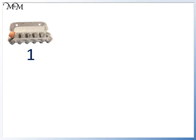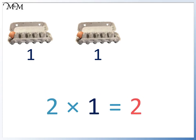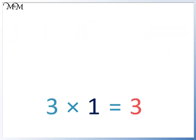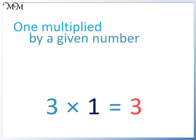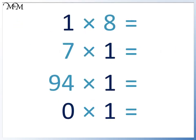Here we have a box with 1 egg. We have one lot of 1 egg. Now we have another box with 1 egg in it — two lots of 1 egg, which equals 2 eggs in total. 2 times 1 equals 2. 3 times 1 equals 3. 1 multiplied by a given number equals the given number.